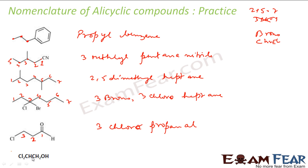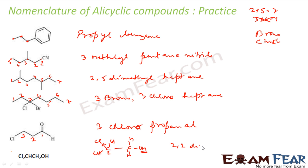Let's take Cl₂CH-CH₂OH. We have one carbon with two chlorines and one hydrogen, then two hydrogens and an OH. The functional group is alcohol, which has higher priority than chlorine, so we give it number one and carbon two has the two chlorines. This is 2,2-dichloroethanol.